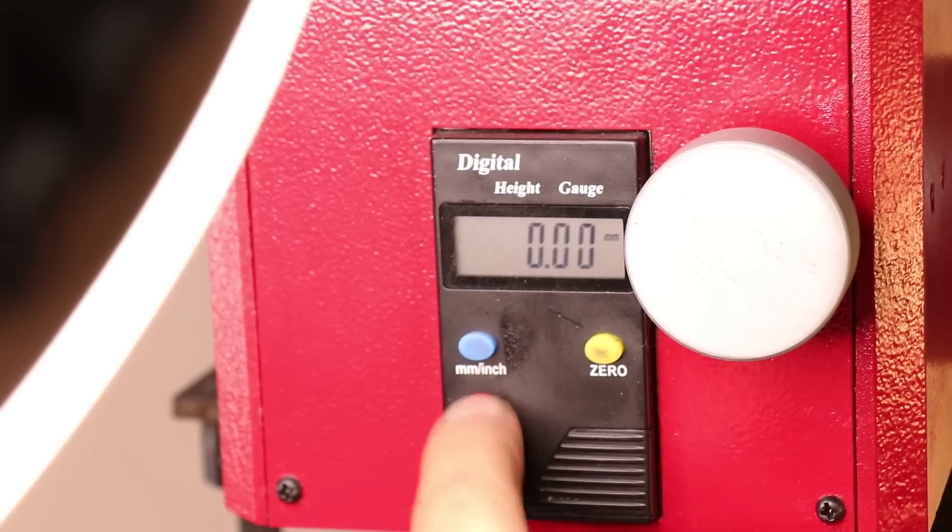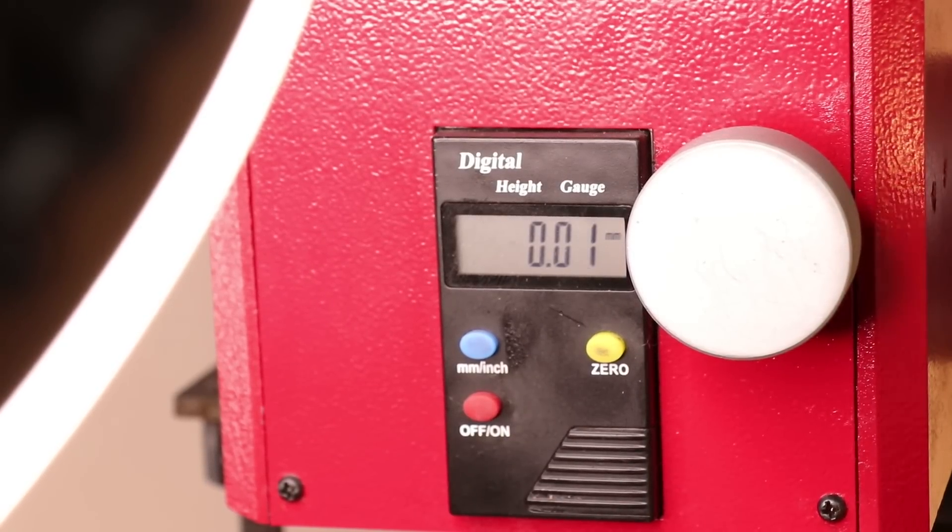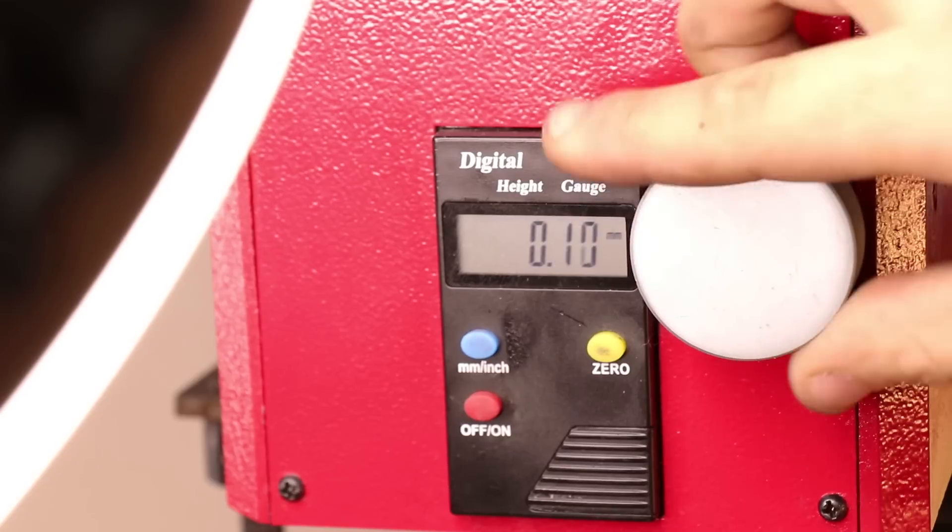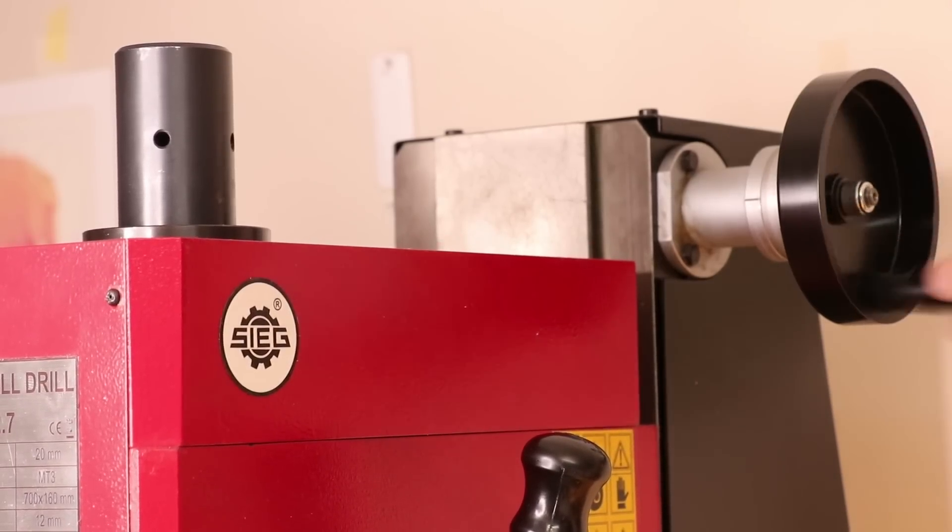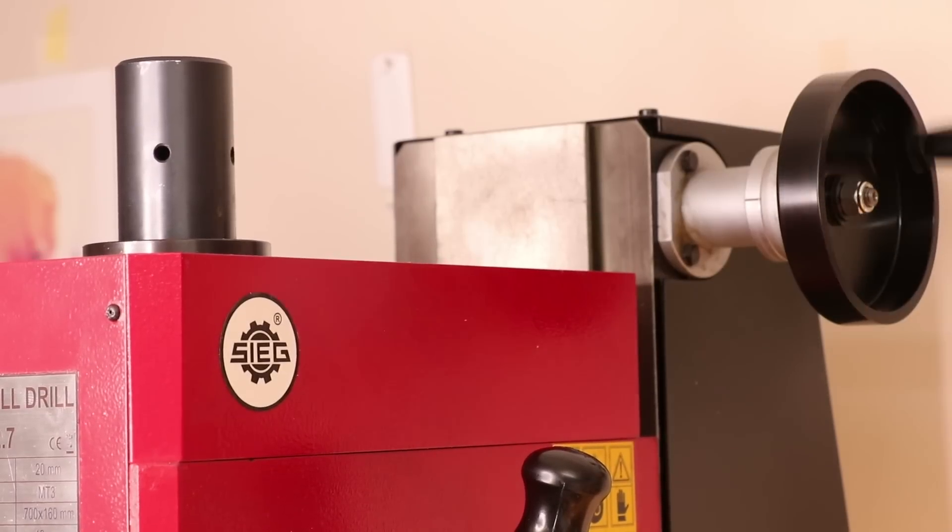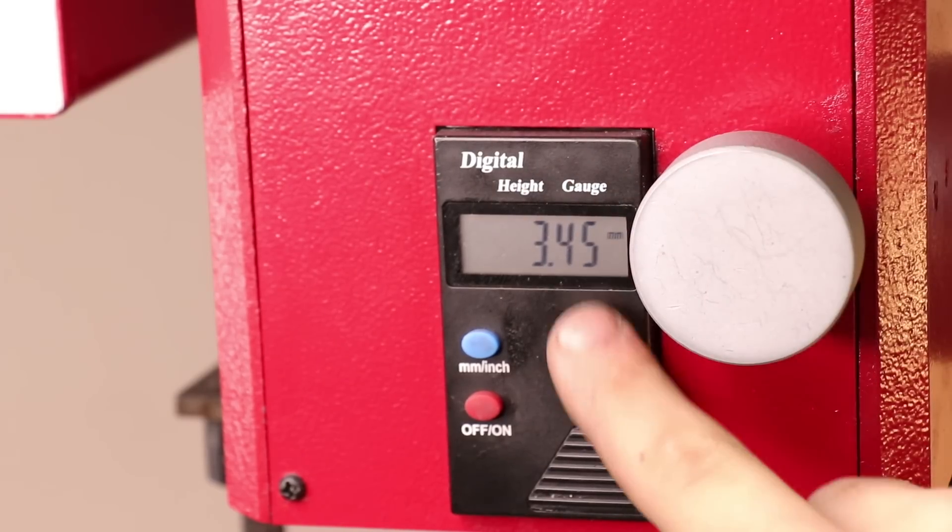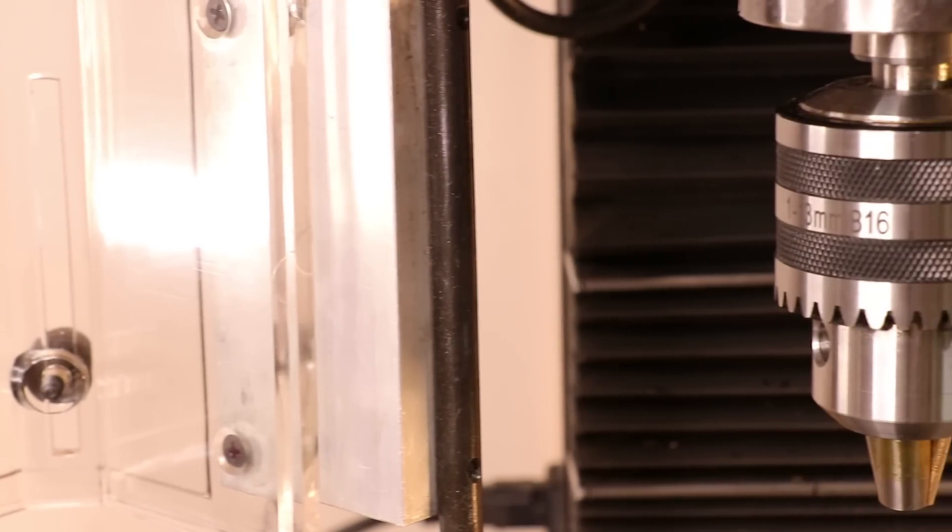Speaking of DROs, the quill actually has one, so when you do set the tool height, what you'll do is you'll use the column to set the general height, and then lock it, and then use the fine adjustment and the quill to select your depth of cut.